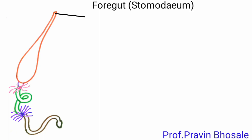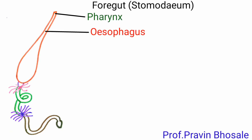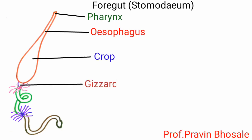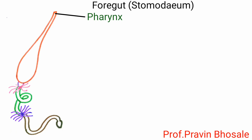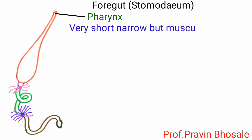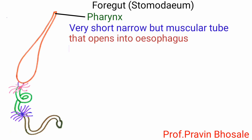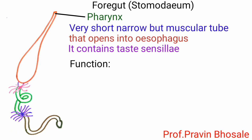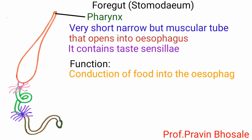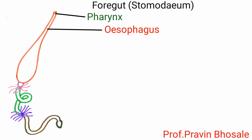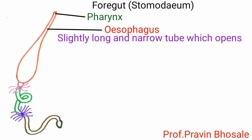Foregut, also called stomodeum, consists of pharynx, esophagus, crop, and gizzard. Pharynx is a very short, narrow but muscular tube that opens into the esophagus. Its function is conduction of food into the esophagus.